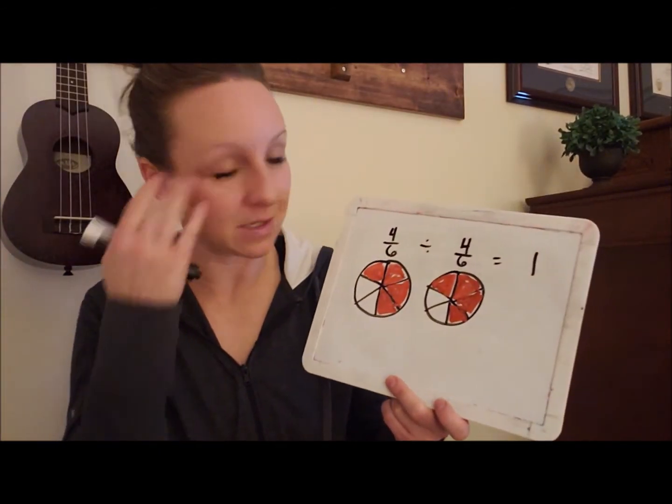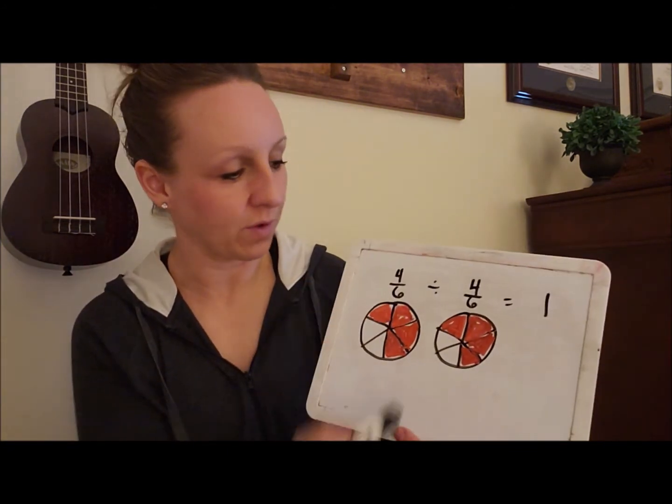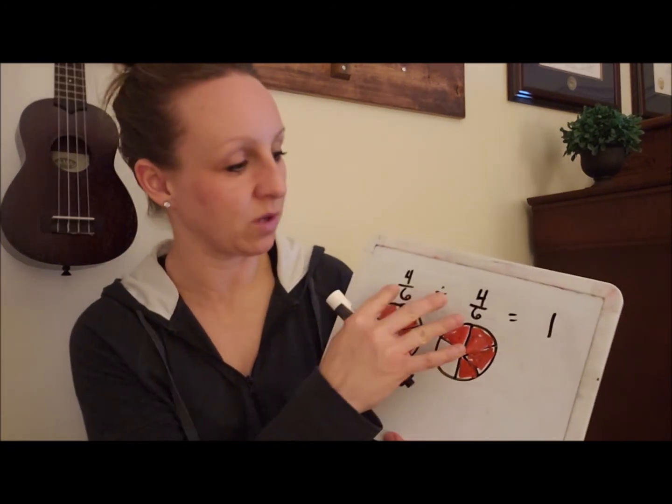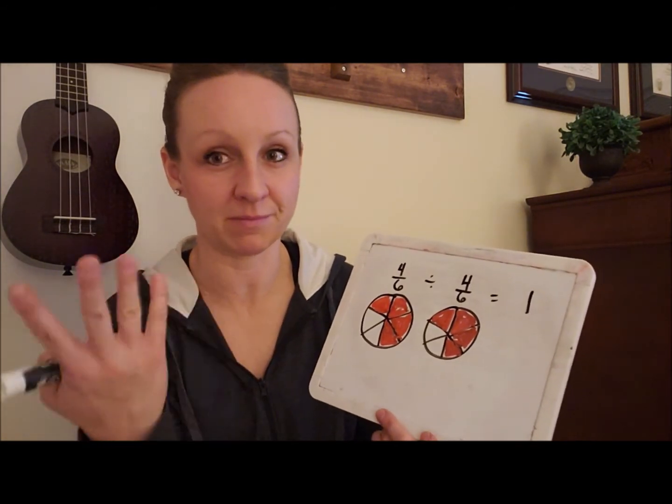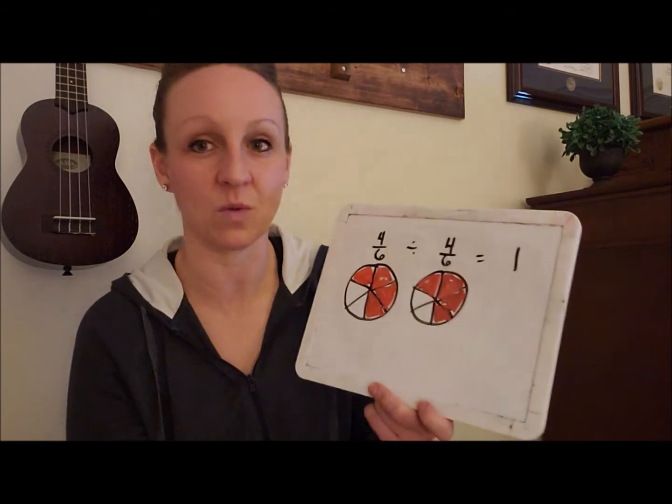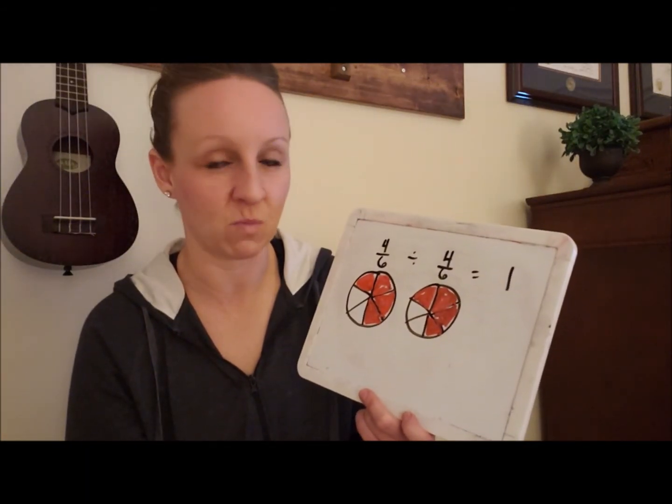Let me show you this. Same sort of thing. Divided these circles into 6. I've got 4 to 6. I'm dividing it by 4 to 6. I ignore the bottom. What is 4 divided by 4? It's 1, right? I've got 4. I'm separating it into one group. It's already separated. One group. There's my answer. It's not like 1 over 6, just 1.